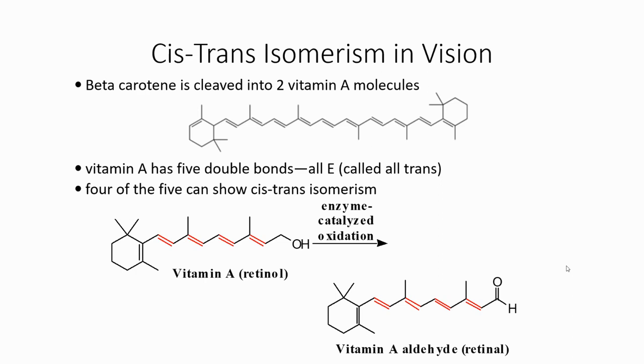So in order to understand why this is important in studying cis and trans molecules, we have to look carefully at the molecules involved. The first one's beta carotene. Now beta carotene can be cleaved into two vitamin A molecules. If we take a look at the beta carotene molecule, it's like a mirror image molecule and it can be cleaved in half, resulting in actually two of the vitamin A molecules.